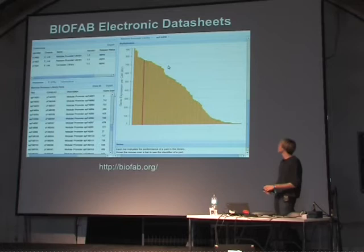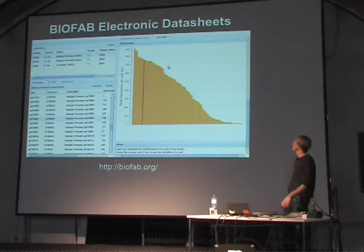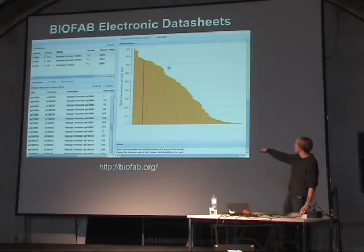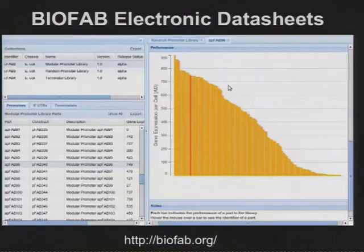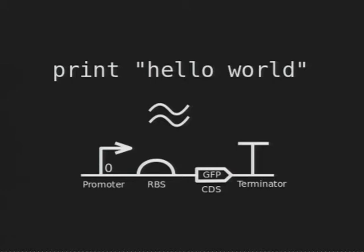This is an example of what an electronic data sheet equivalent for biology could look like — and this is what we'd like to see for all the parts in biology. There's an organization called BIOFAB in California that's trying to create a library of professionally characterized parts. You can go to their website and find parts with the exact function you want and look at the data. We're beginning to get well-characterized parts.